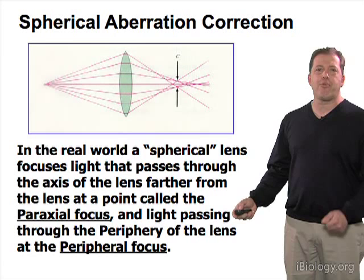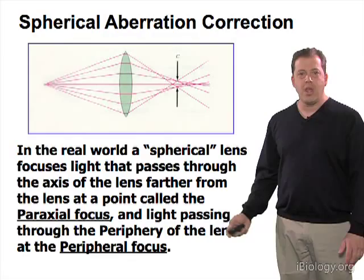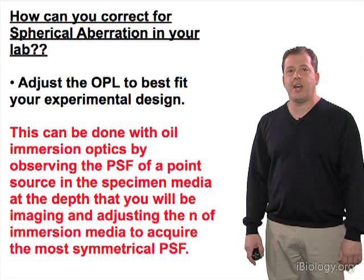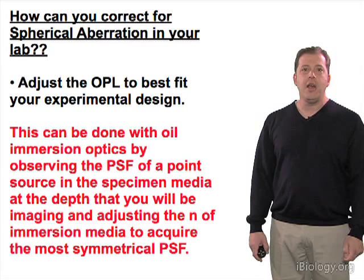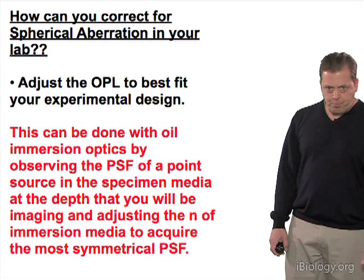So we have this paraxial focus and peripheral focus, and we need to bring those together. No matter how you correct for spherical aberration, what you're doing is adjusting the optical path length to best fit the design criteria of the lens.